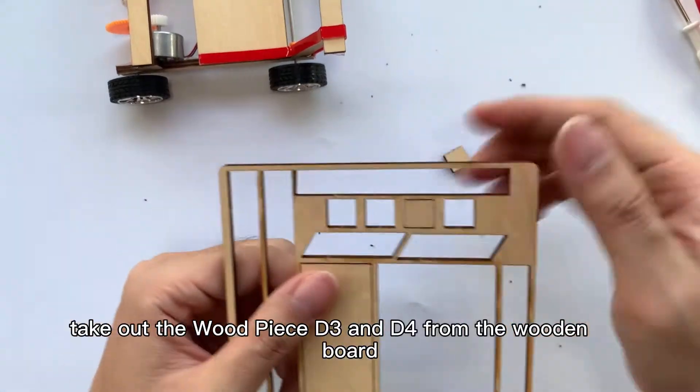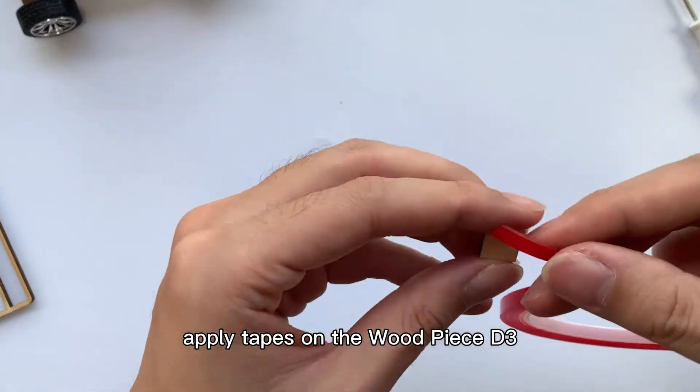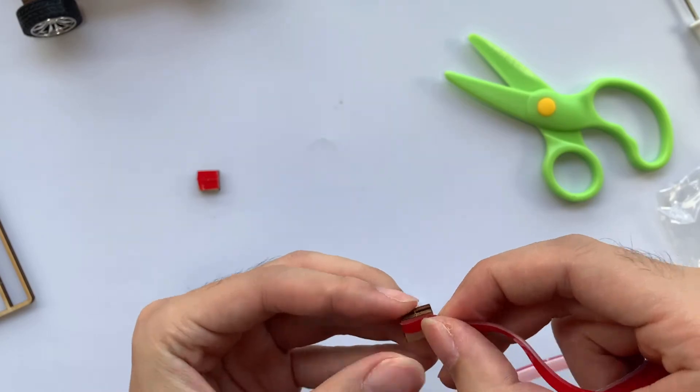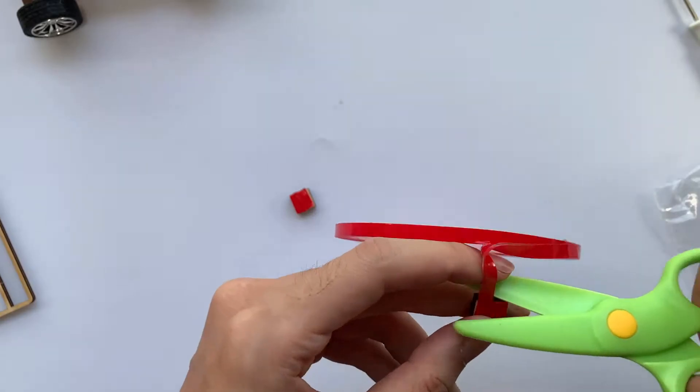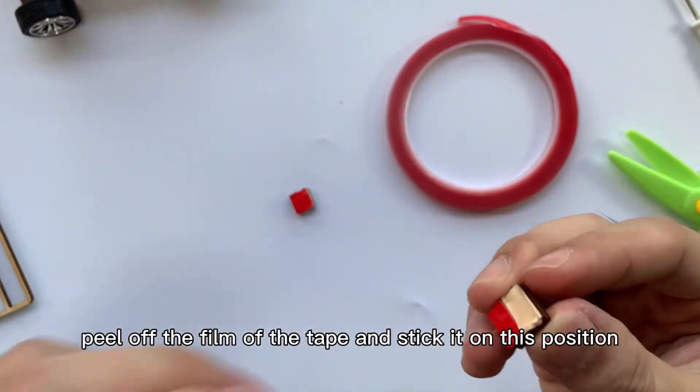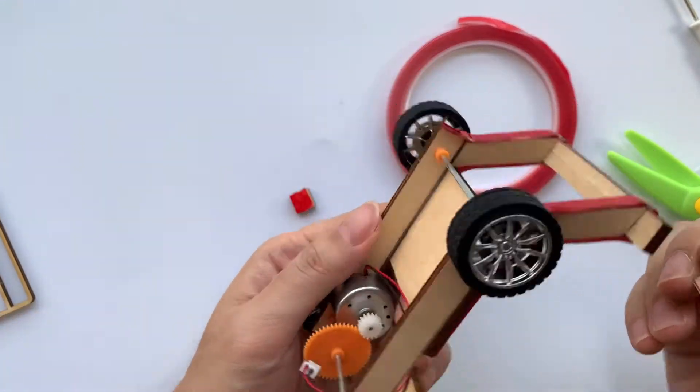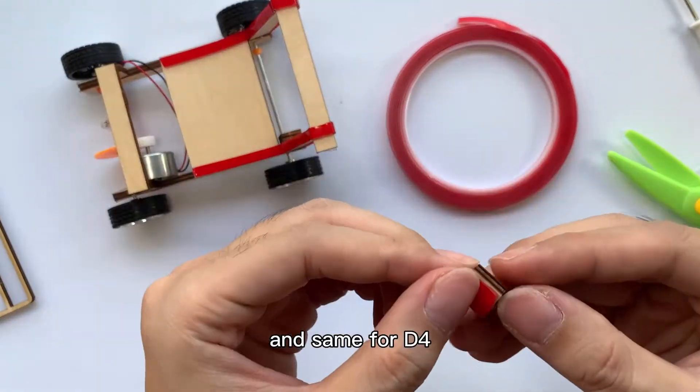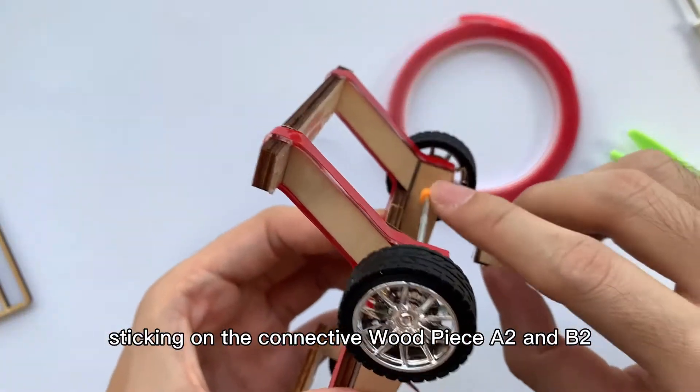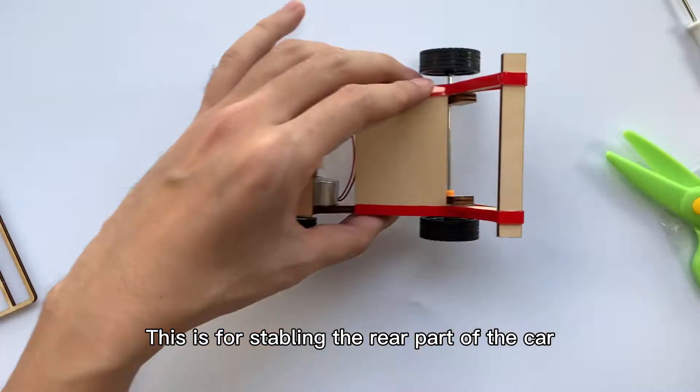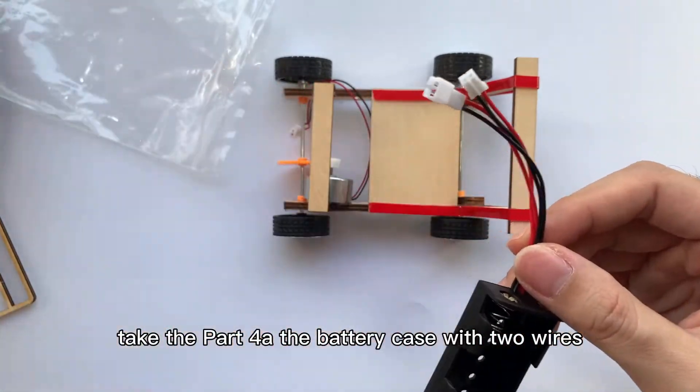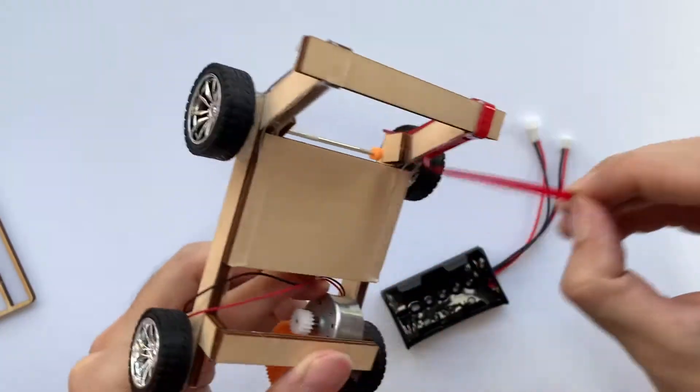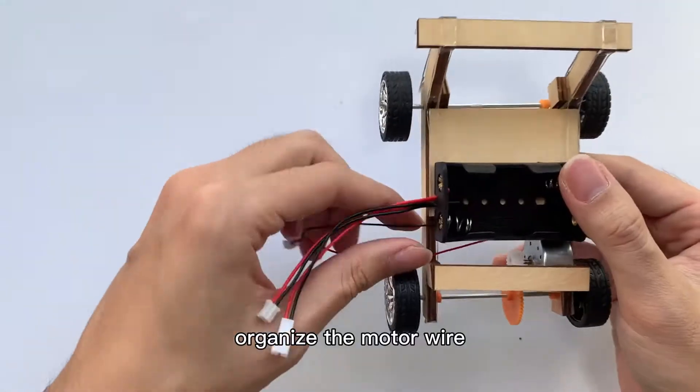Step 15: Take out the wood piece D3 and D4 from the wooden board. Apply tapes on the wood piece D3 and same for D4. Peel off the film of the tape and stick it on this position, the connection of wood piece A1 and B1, and same for D4 sticking on the connective wood piece A2 and B2. This is for stabilizing the rear part of the car. And then take out the battery cases. Take the part 4A, the battery case with two wires. Peel off the film of tape on the car and put on the battery case and stick it firmly. Organize the motor wire.